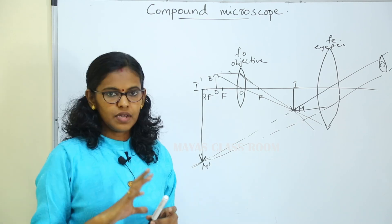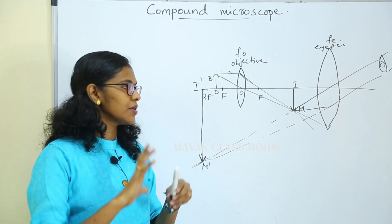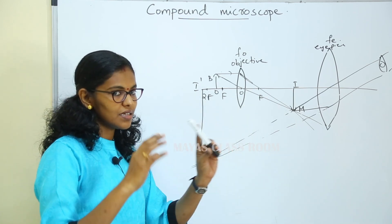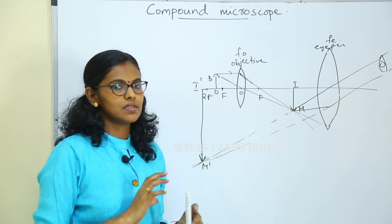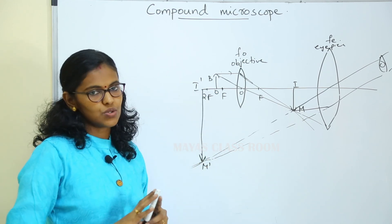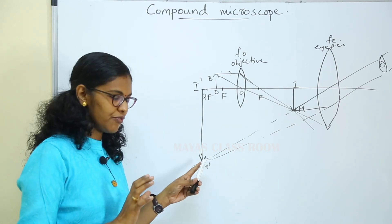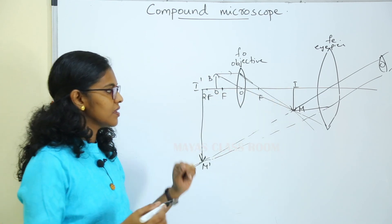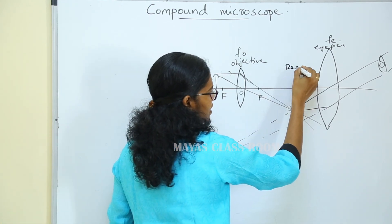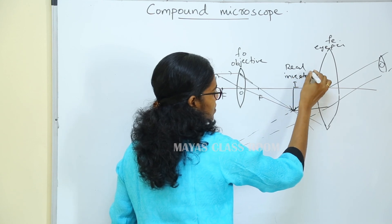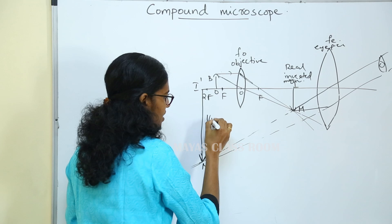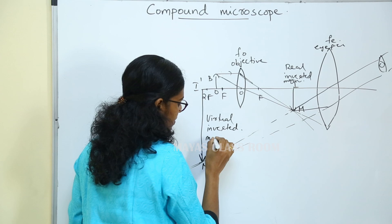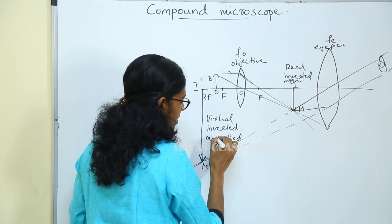In a compound microscope, we first see an intermediate real magnified image formed by the objective lens. When we look at this intermediate image through the eyepiece, a virtual image is formed. This final image is highly magnified and inverted.